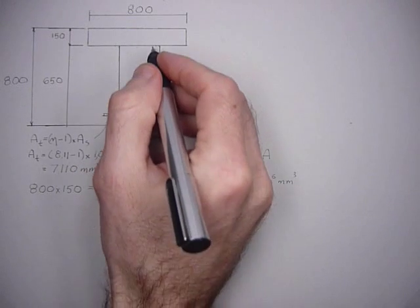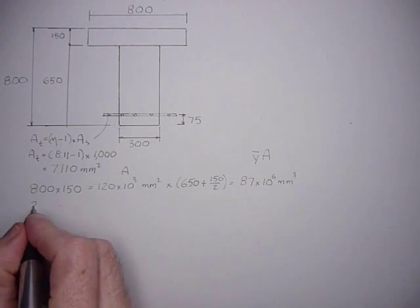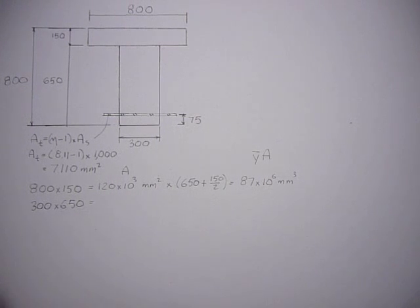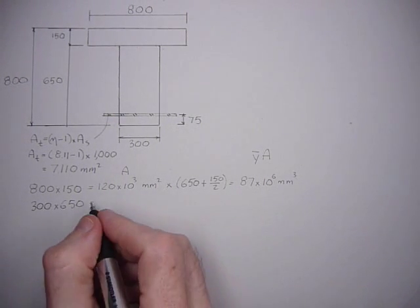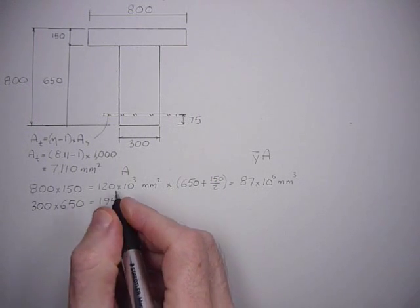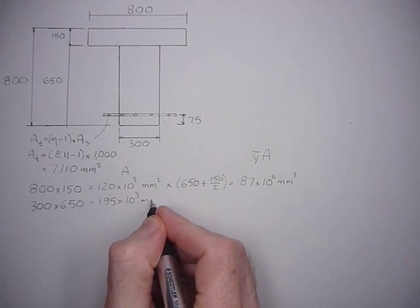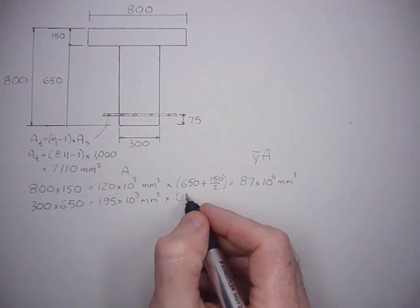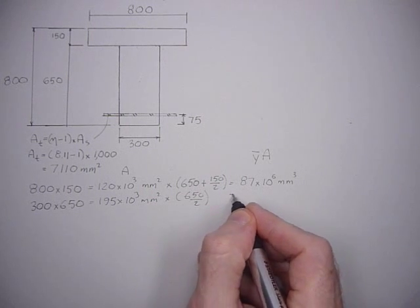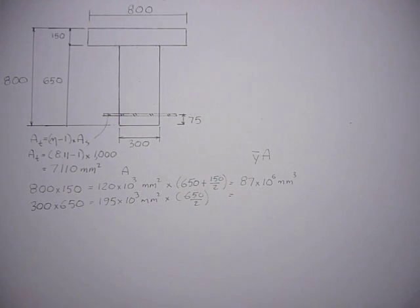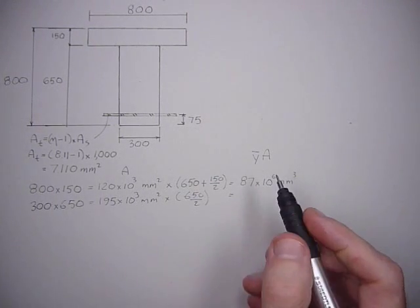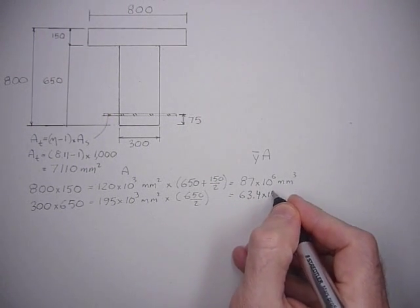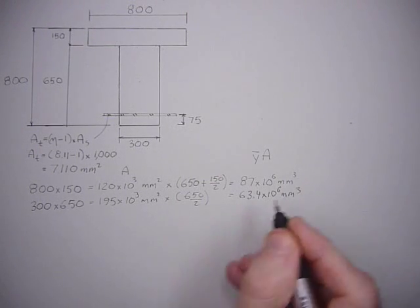The next segment, the web, is 300 wide by 650. 300 times 650 is 195 times 10 to the third millimeter squared. Its centroid is half of 650, so 650 over 2. That's 63.4 times 10 to the sixth millimeters cubed.